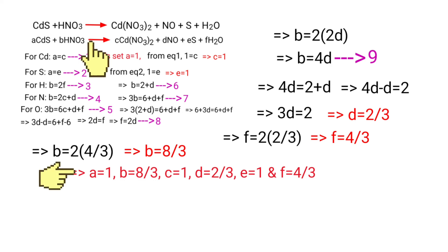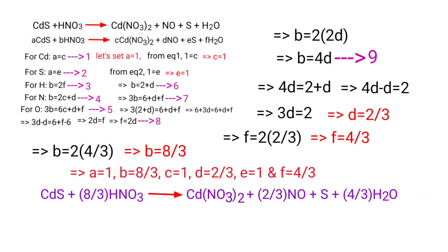Now substituting the values of A, B, C, D, E, and F back into the equation: CdS + 8/3 HNO₃ → Cd(NO₃)₂ + 2/3 NO + S + 4/3 H₂O.